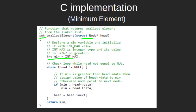We start traversing the linked list and if the current value of min is greater than the current head data, then we update min and the current head data is assigned to min. After that we update the head pointer to point to the next node. Once we have traversed the whole linked list — meaning the head pointer becomes null — we return min, which is the minimum element in the linked list.